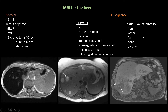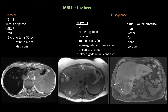A normal liver should demonstrate uniform T1 signal intensity, similar or iso-intense to paraspinal muscles, and it's a little bit more intense than the spleen. The things that are bright on T1 are fat, hemorrhage, melanin, and some paramagnetic contrasts. The things that appear dark on T1 include iron, water, air, bone or calcifications, and collagen.